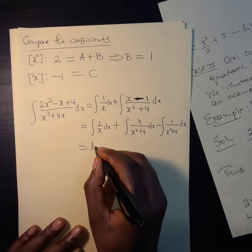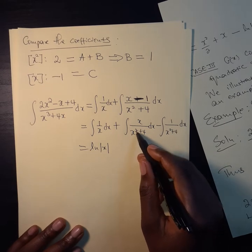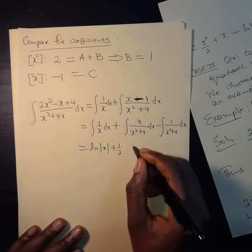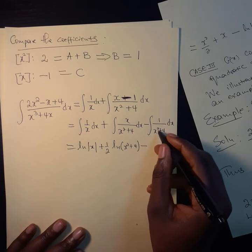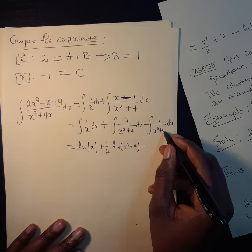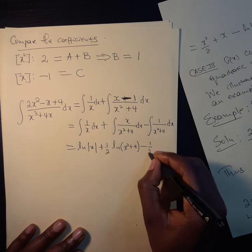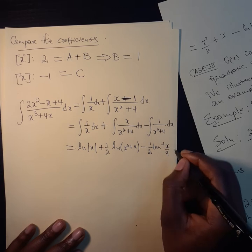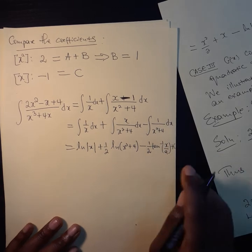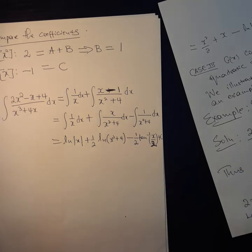This first one is ln|x|. For the second one, if you let u equal x squared plus 4, differentiating gives 2x, so it produces a half times ln|x squared plus 4|. Minus this last one — recalling the arctan formula with a squared equal to 4, so a equals 2 — gives minus 1 over 2 arctan of x over 2, plus C. And that settles it.